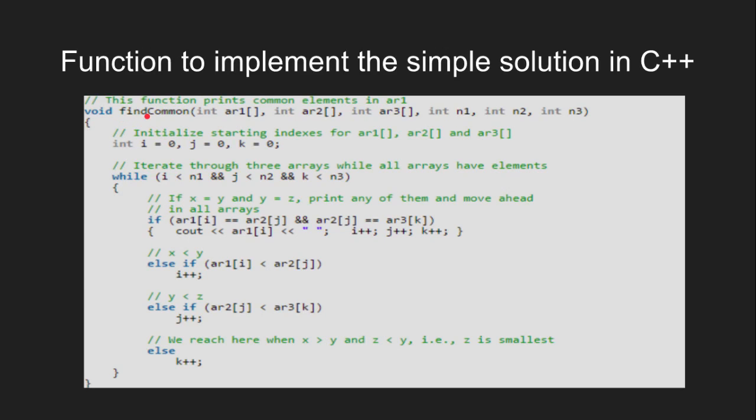Now, let us look at the implementation in C++. We have a function find common which takes array 1, array 2 and array 3 and their corresponding sizes as its parameter. Variables i, j and k are used for traversing array 1, 2 and 3. Here, this while loop runs till none of these arrays goes out of bounds.